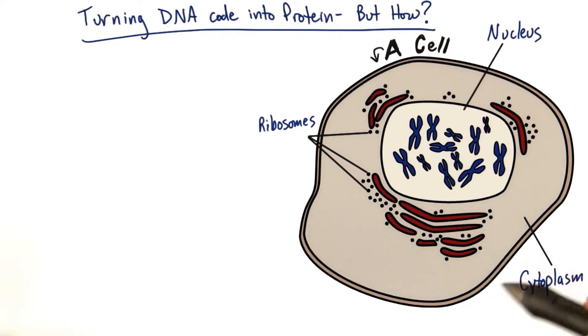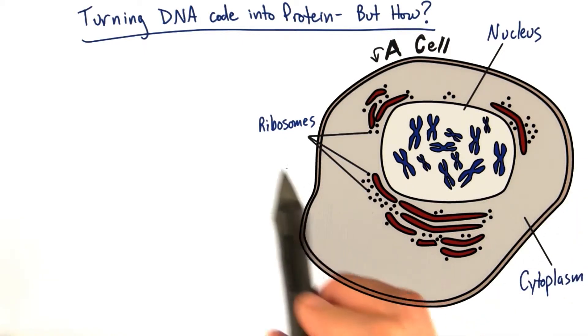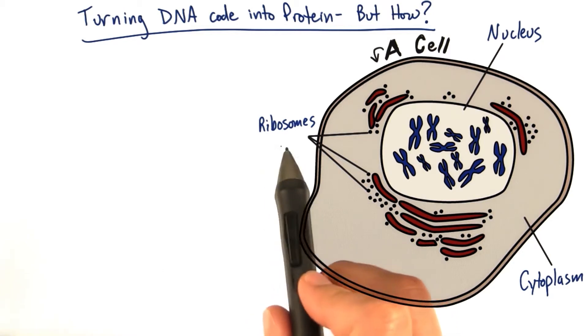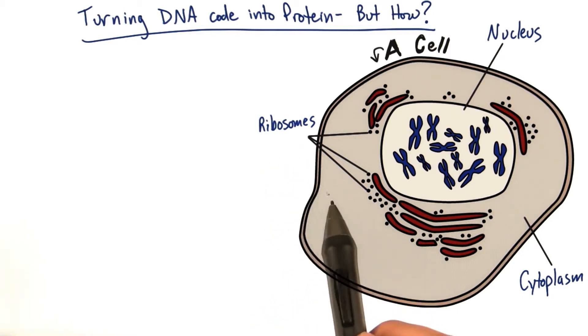But out here in the cytoplasm of the cell, we see these black dots which are representing ribosomes. And ribosomes are the machines that will build proteins.